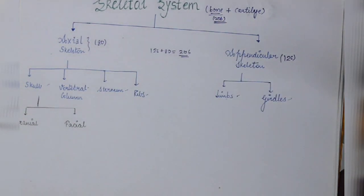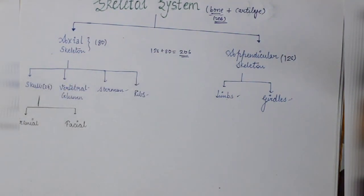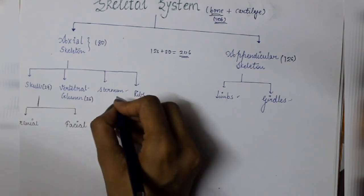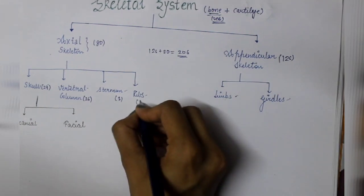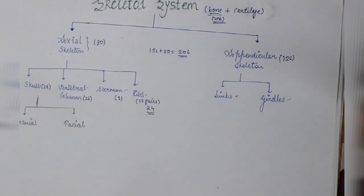Out of this, the skull consists of 29 bones. The vertebrae column consists of 26 bones. The sternum is only single and ribs are in 12 pairs, or we can say 24. So total is 80.